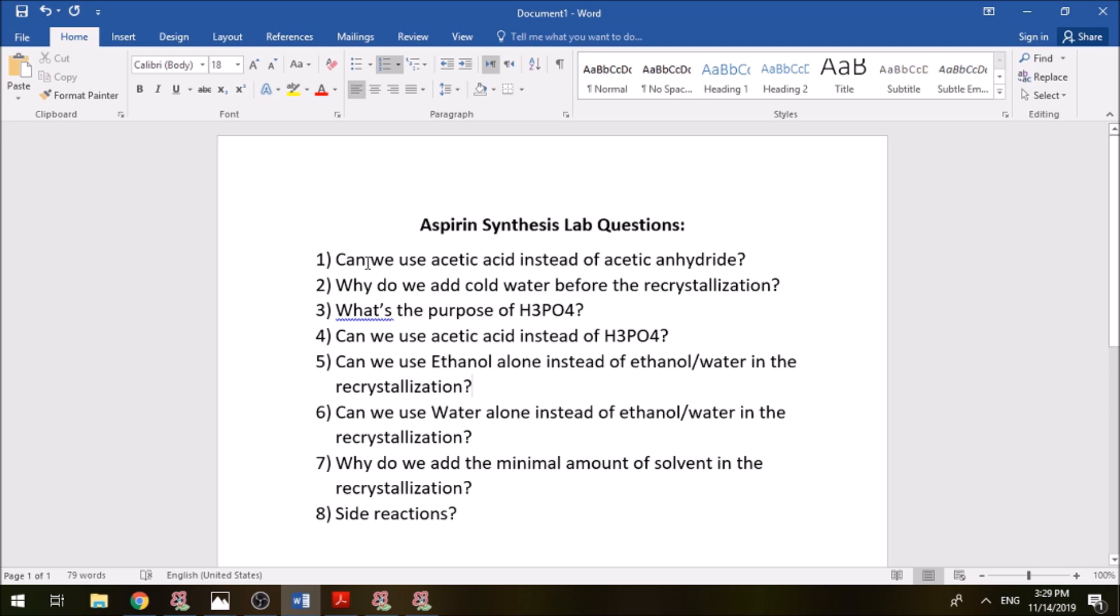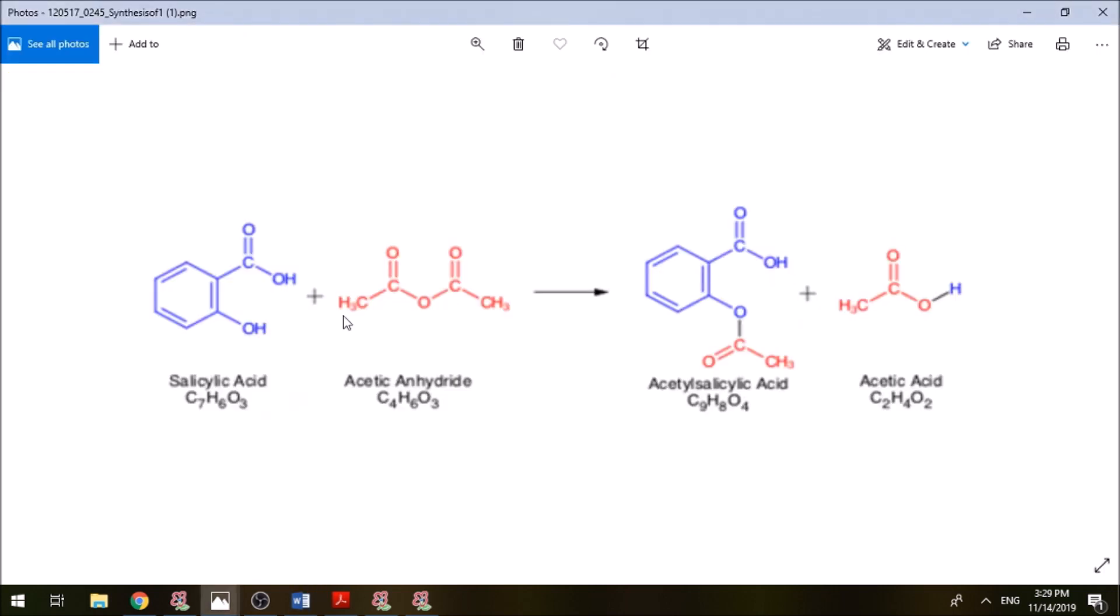The first question says can we use acetic acid instead of acetic anhydride? So here we have our reaction which is salicylic acid reacting with acetic anhydride to form aspirin and acetic acid. They're asking us if we can use acetic acid instead of the acetic anhydride. It's possible, we can use it but the problem is that acetic anhydride is more active than acetic acid.